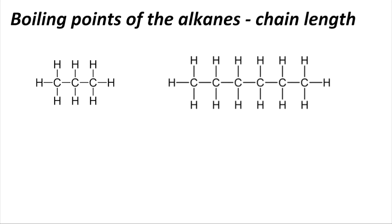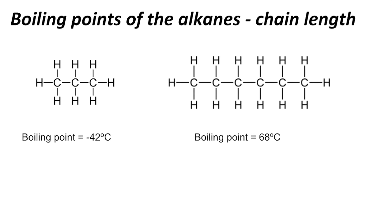Moving on to boiling points of alkanes — we'll look at how chain length affects the boiling point. We've got propane on the left with three carbons and hexane on the right with six carbons. The boiling point of propane is minus 42°C, and for hexane it's 68°C. You can see that the longer the chain, the higher the boiling point — so why is that?